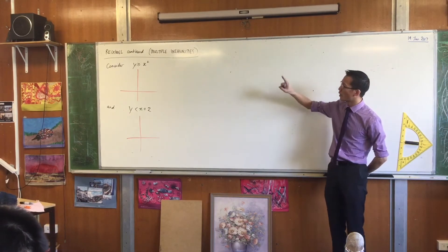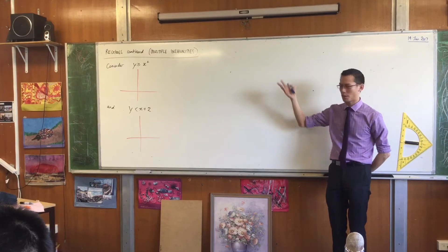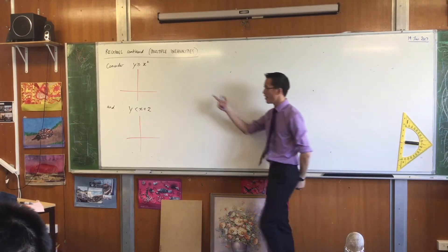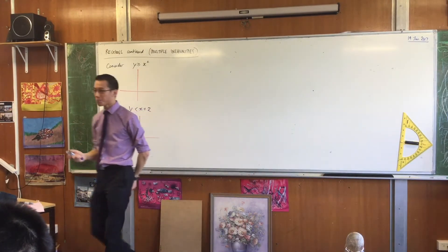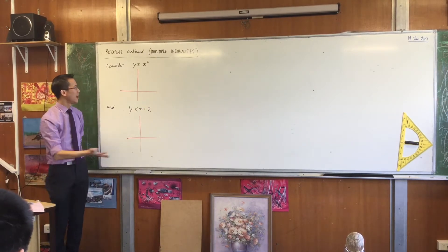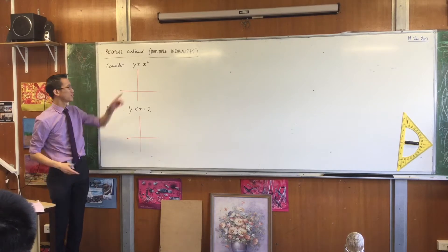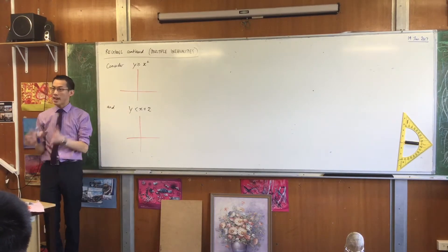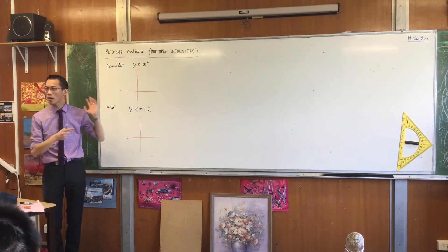So before we have a look at what this heading is about when you look at multiple inequalities, let's just revise back. What does it look like when you've just got one? Y is greater than or equal to x squared. I gave you a rule of thumb. It's not always exactly true, but I gave you a rule of thumb with Y as a subject. What can we say about this?